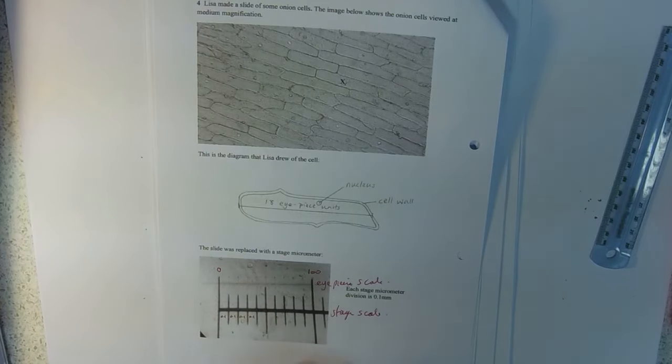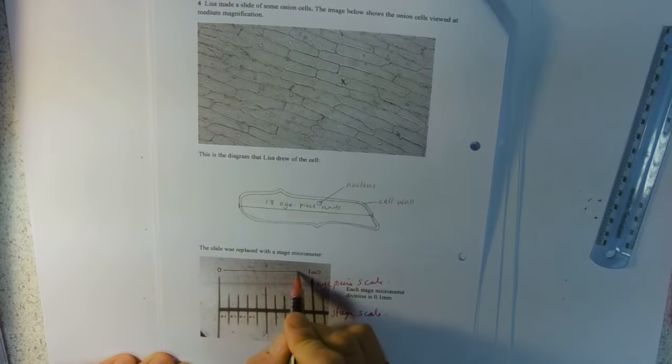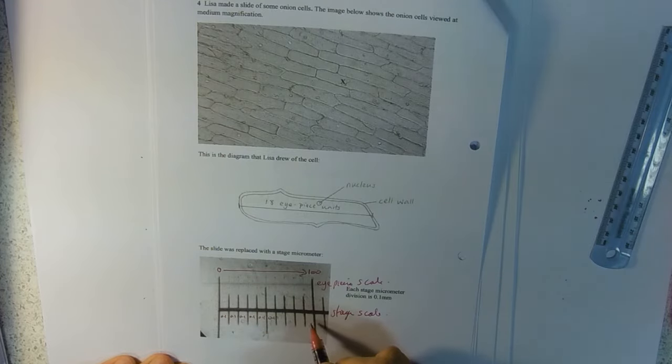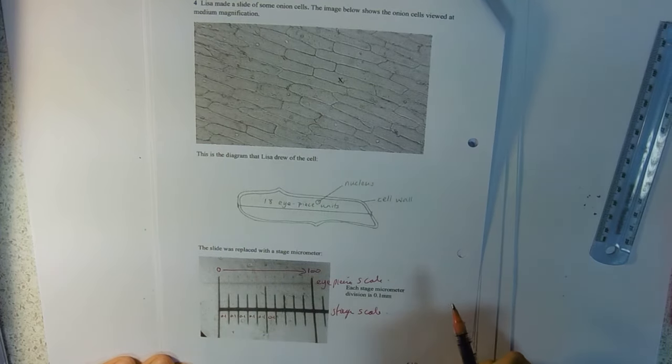So our calculation is going to start off when we do it. We're looking at 100 of our eyepiece units is equal to how many of these? Well we've got 10 of those 0.1s, so 100 eyepiece units is 10 stage micrometer units. So 10 times by 0.1 millimeters, and that's your calculation there.